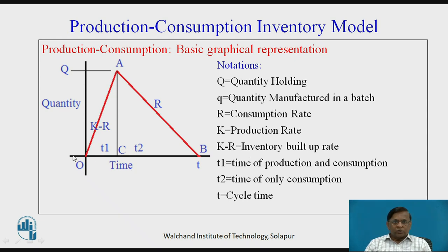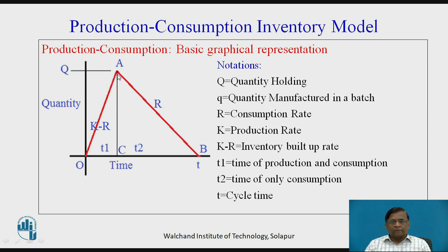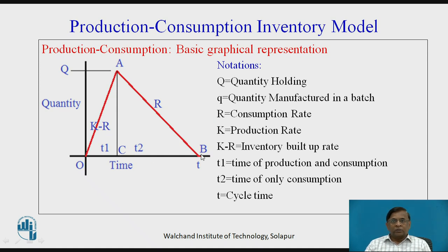T1 is the time from O to point C — this is the time period during which we are producing as well as consuming the inventory items. When we reach point A, we stop manufacturing. Thereafter, the quantity physically holding, capital Q, is consumed from A to B at the rate of R for time period T2. So T2 is the time period of only consumption, during which we are not manufacturing anything. In all, O to B is the total cycle time. This is overall how the production consumption inventory control model looks graphically.